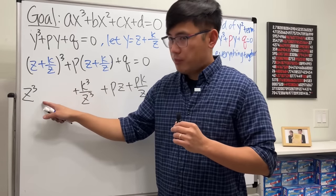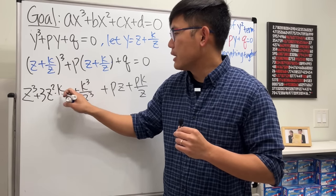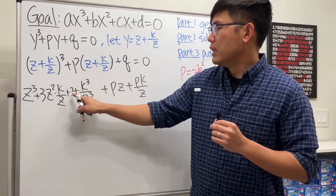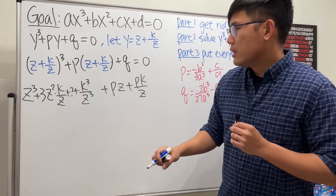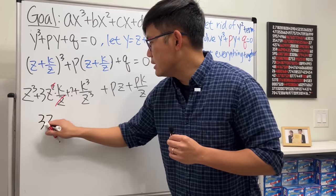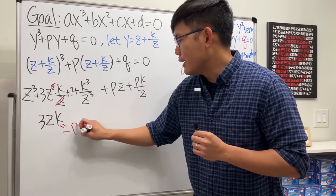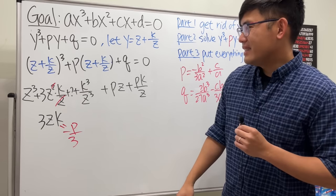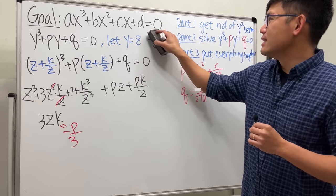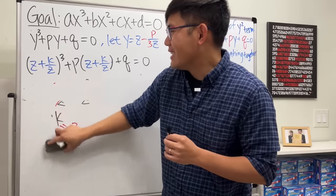The middle term from expanding the cube is 3z·k, which gives 3kz. We want to cancel +pz, so 3k + p = 0, meaning k = -p/3. I'll come back and replace k with -p/3·z in the substitution. That was just scratch work — now let's erase it and be much happier.